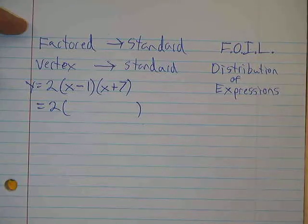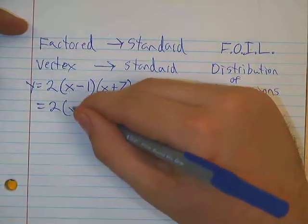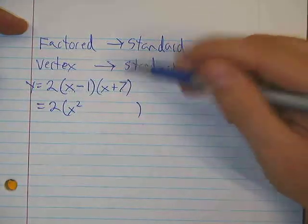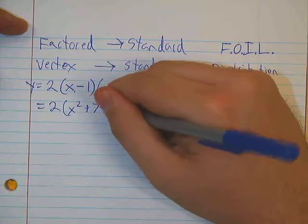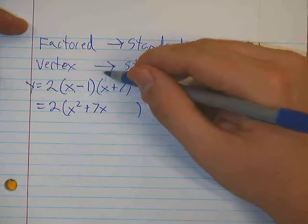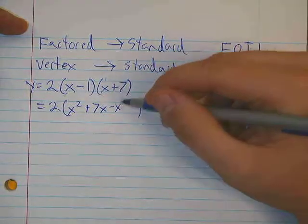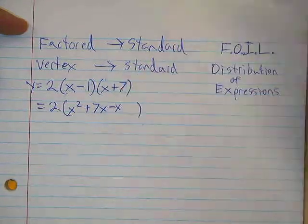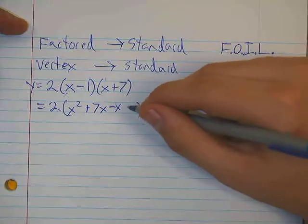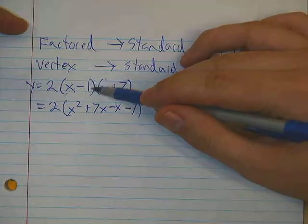It stands for first, outer, inner, last. That means that you take your x and your x and you multiply them together to get an x squared. Then your outers, that's your x and your 7, gives you 7x. Inner means these 2 inside terms. Negative 1 and x gives me minus x. And last, negative 1 times positive 7 gives me negative 7.